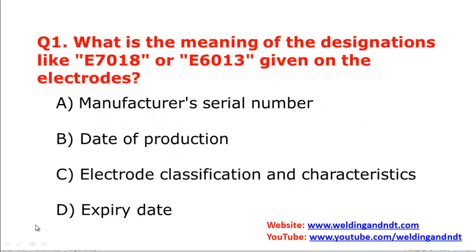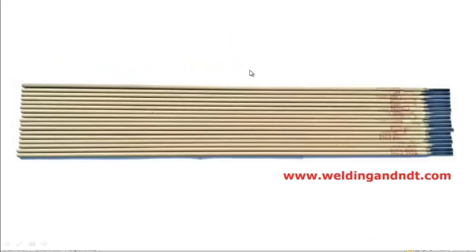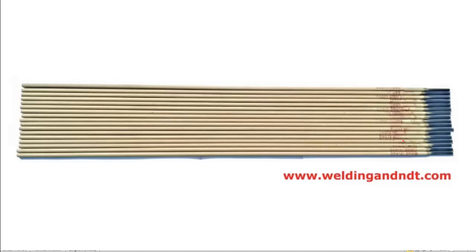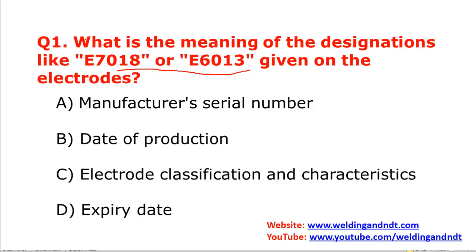Our first question is: what is the meaning of designations like E7018 or E6013 given on the electrodes? You will often see some coding system given on the electrode — on one side of the electrode, like here you can see the numbers are in red color. So what is the meaning of those numbers or what is the meaning of these codes?